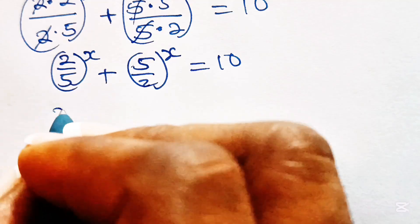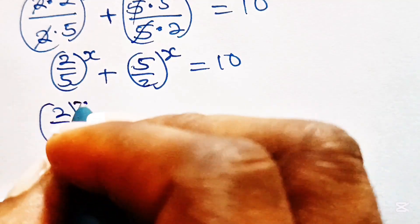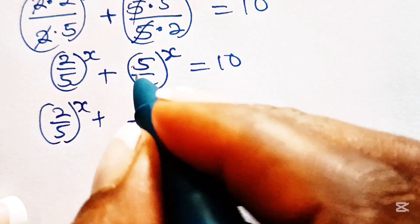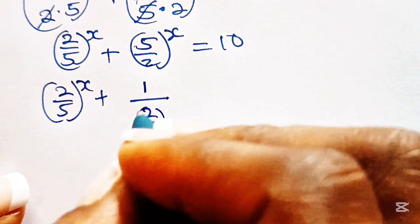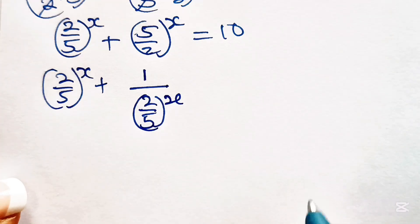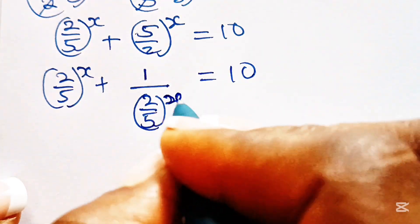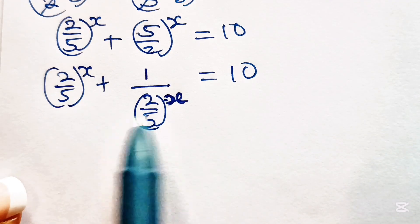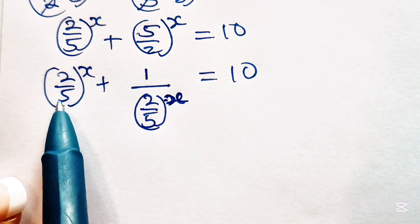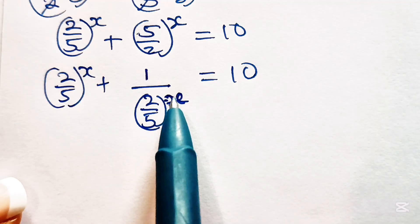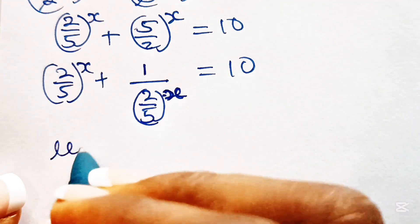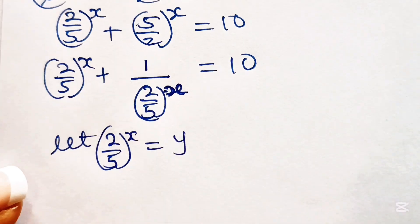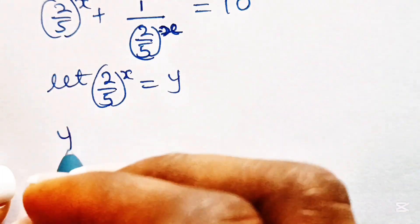Now looking at this, we have 2 over 5 raised to the power of x. If we introduce the reciprocal of 5 over 2, we now have 2 over 5 as well, raised to the power of x. Notice that we have 2 over 5 to the power of x here, and 2 over 5 to the power of x as well. So we can say, let 2 over 5 raised to the power of x be equal to y.